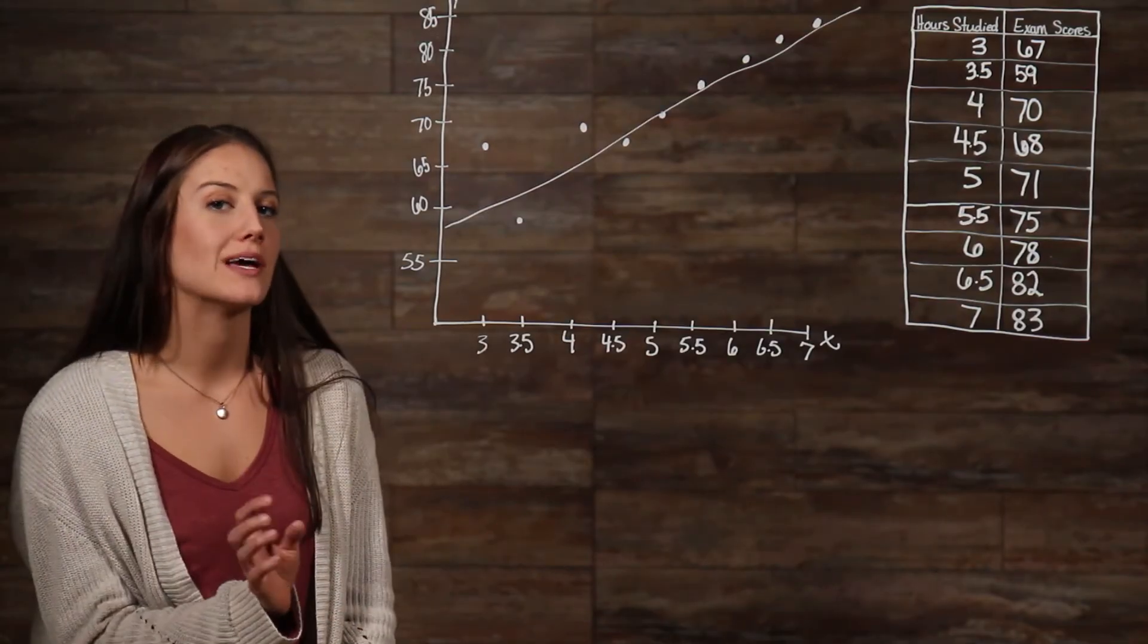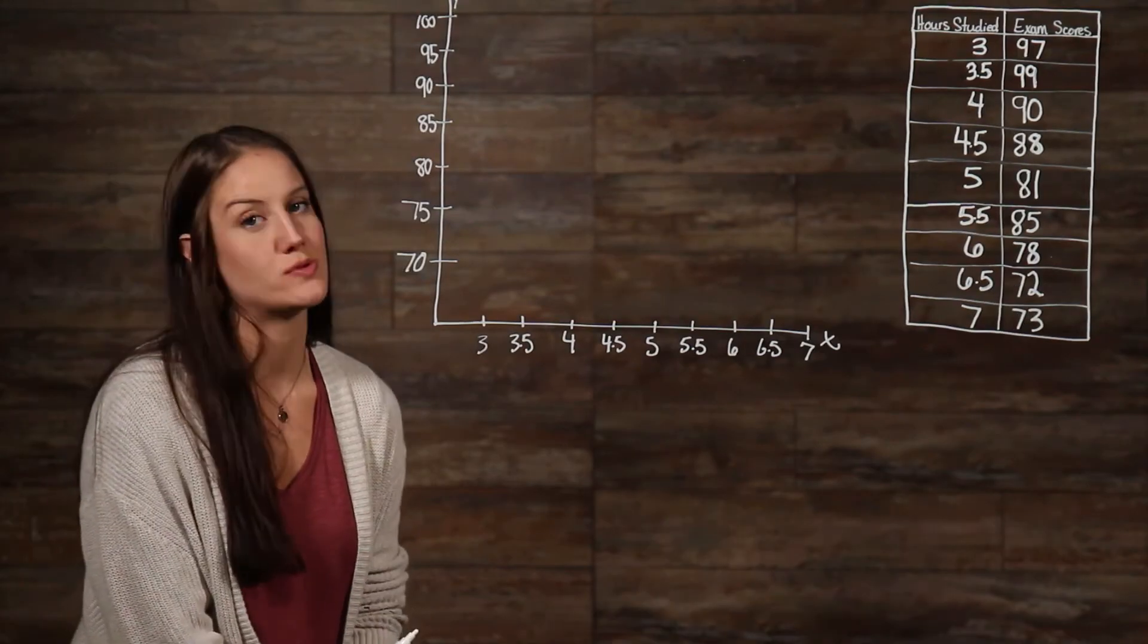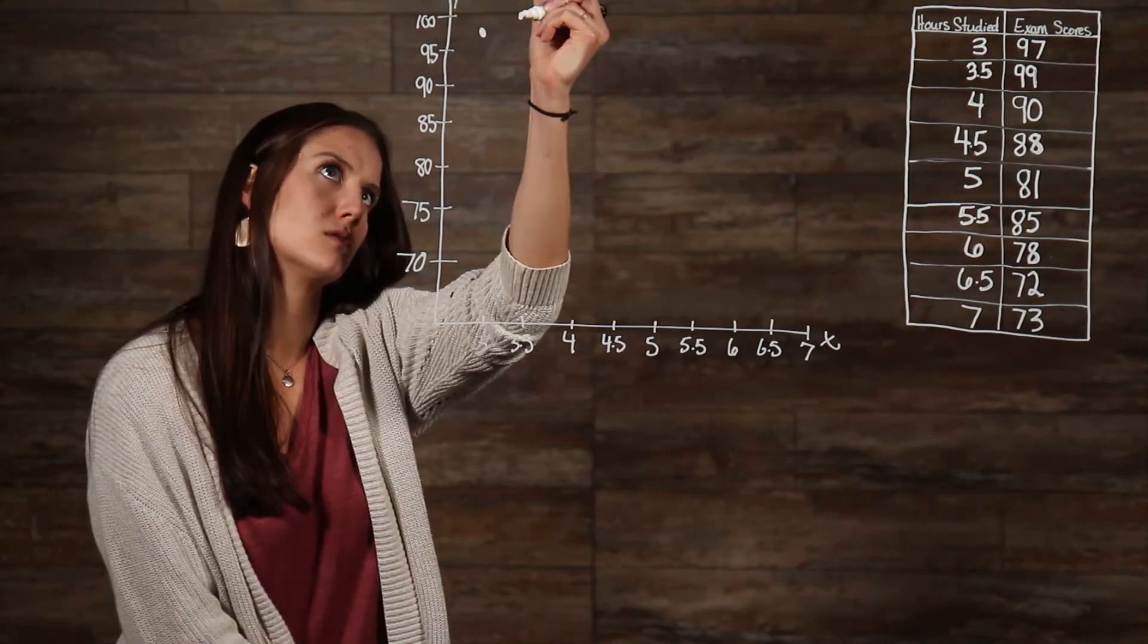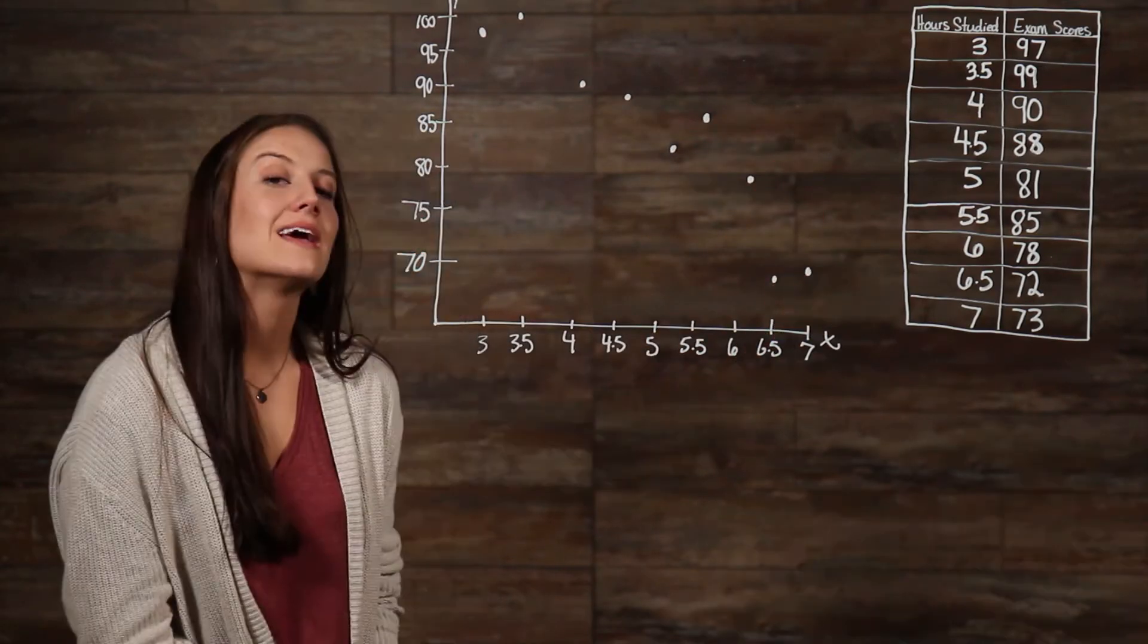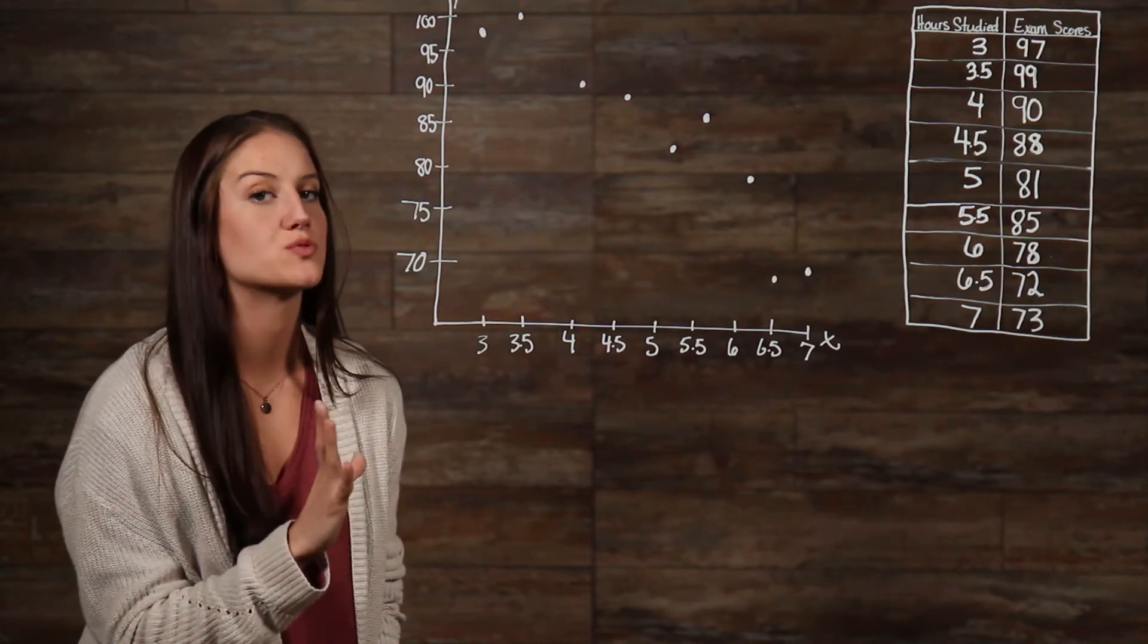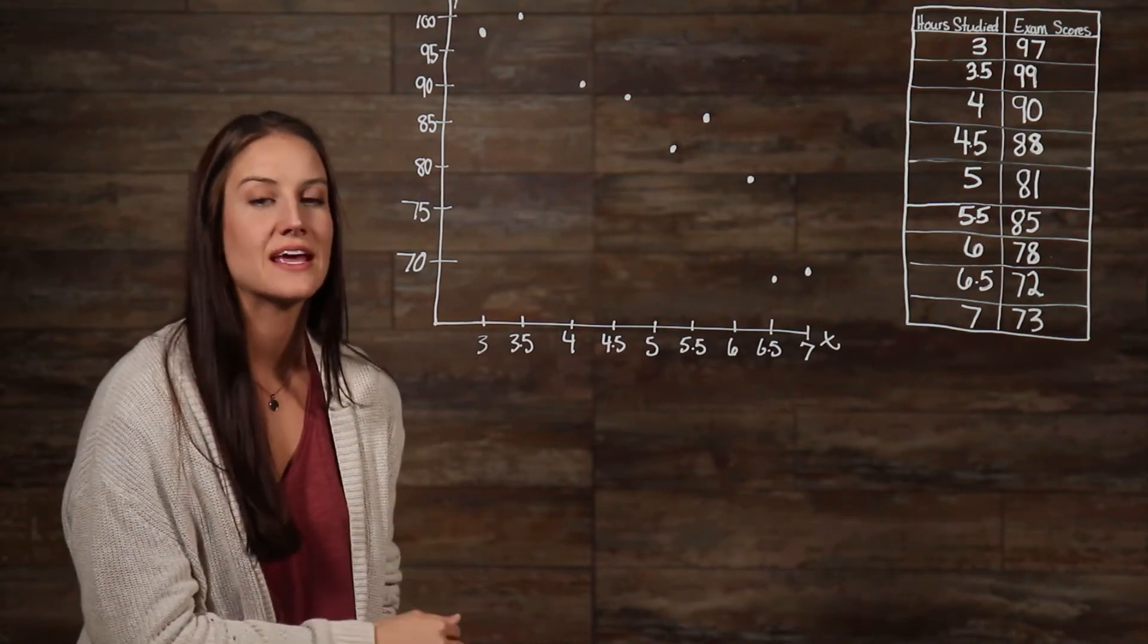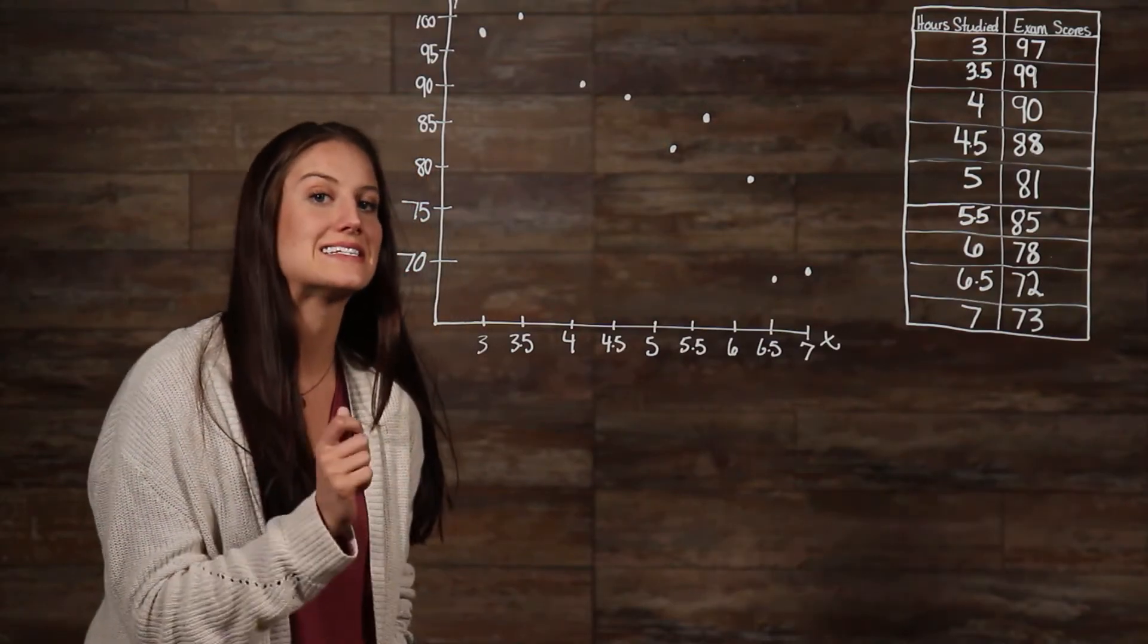Now, let's take a look at the same table and change up our exam scores a little bit. Let's plot our new data points. In this scatter plot, we can see that we have a negative relationship overall between our two corresponding variables. As the study time increases, our exam scores decrease.